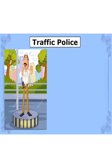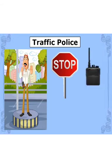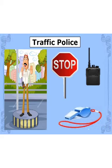Our next helper is a traffic police. Traffic police controls the traffic on the road. To control the traffic, he uses a stop sign to tell people to stop, don't go, wait here. He also uses a wireless mobile to connect with other traffic police. And since there is a lot of pressure on the road and we have to listen to him, he uses a whistle so that he can make us understand and listen to him.